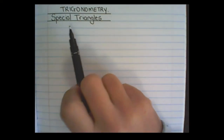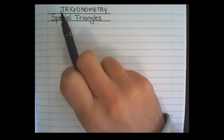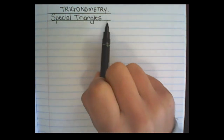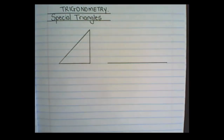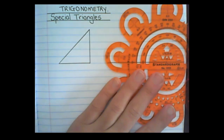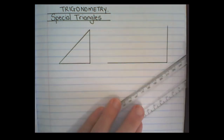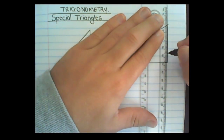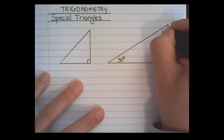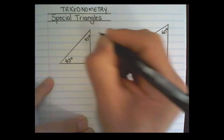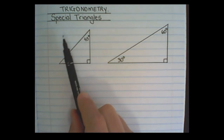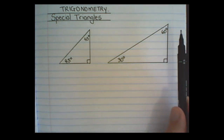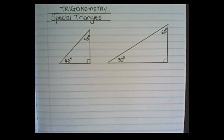In today's video we are going to continue with trigonometry and we are moving on to special triangles. The two special triangles that we have are the 45-degree triangle and a 30-60-90 degree triangle.